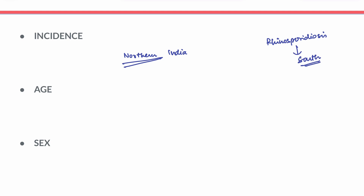Regarding demographics, this disease can occur at any age, but the most common age group is the second to third decade of life. When it comes to sex, it is seen in both males and females, but there is a slight female preponderance compared to males.